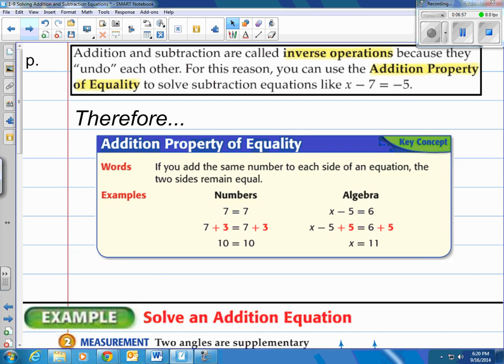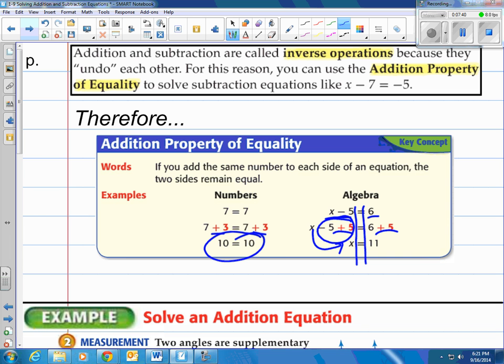Let's look at the next piece of information here. Addition and subtraction are called inverse operations because they undo each other. For this reason, you can use the addition property of equality to solve subtraction equations just like x minus 7 equals negative 5. And you notice in here on the key concept that they basically are saying, if we added numbers to both sides, if they're the same, it doesn't change. Everything stays equal. Now, notice here in the algebra side, the same thing. They have x minus 5 and 6 being equal. Well, if you add 5 to the left side and add 5 to the right side, this becomes 0. And now you have x here. And you have 6 plus 5, which is 11. And you can check that that is correct. 11 minus 5 is 6.